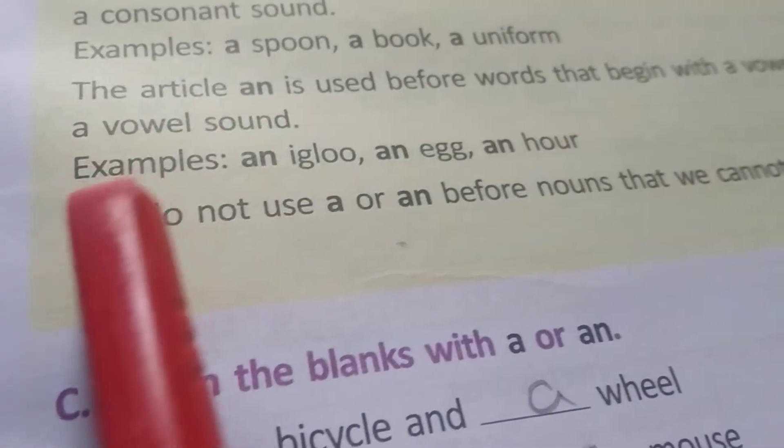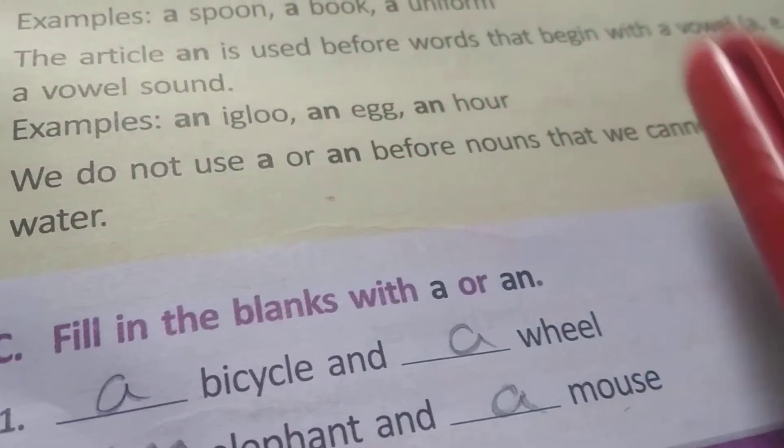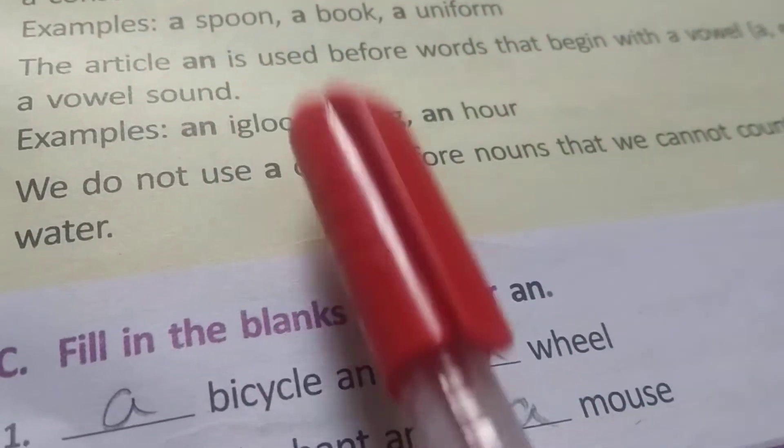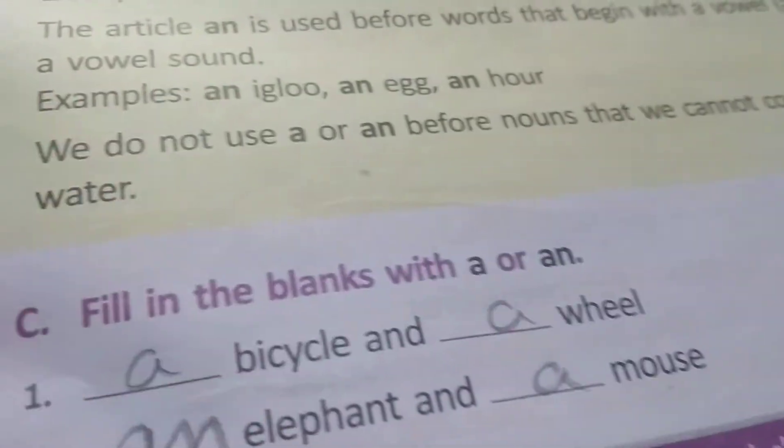A vowel sound. Examples: an igloo, an egg, an hour, an apple, an elephant. See, an ant. We use an.